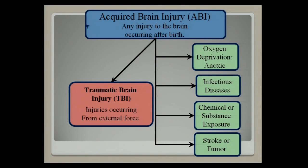An acquired brain injury is any injury to the brain occurring after birth. For the purposes of this talk, I'm focusing primarily on traumatic brain injury — what you see in the pink box — injuries that are caused by an external force. But I don't want to leave out the idea of acquired brain injury, which includes things such as oxygen deprivation, anoxic injury, infectious disease, chemical or substance abuse exposure, strokes, and tumors — all of which can cause an acquired brain injury and cause deficits in cognition that we still have to address.